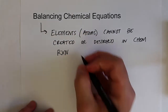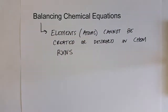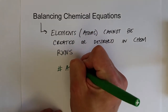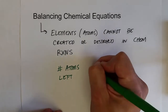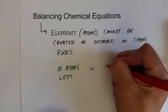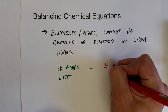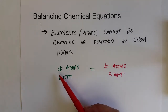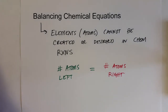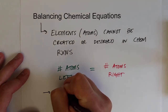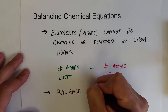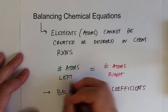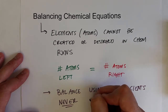I often abbreviate chemical reactions as Rxn and Rxns. What this means is that the number of atoms on the left side for each element must equal the number of atoms on the right side. We balance using coefficients — we never change the subscript.